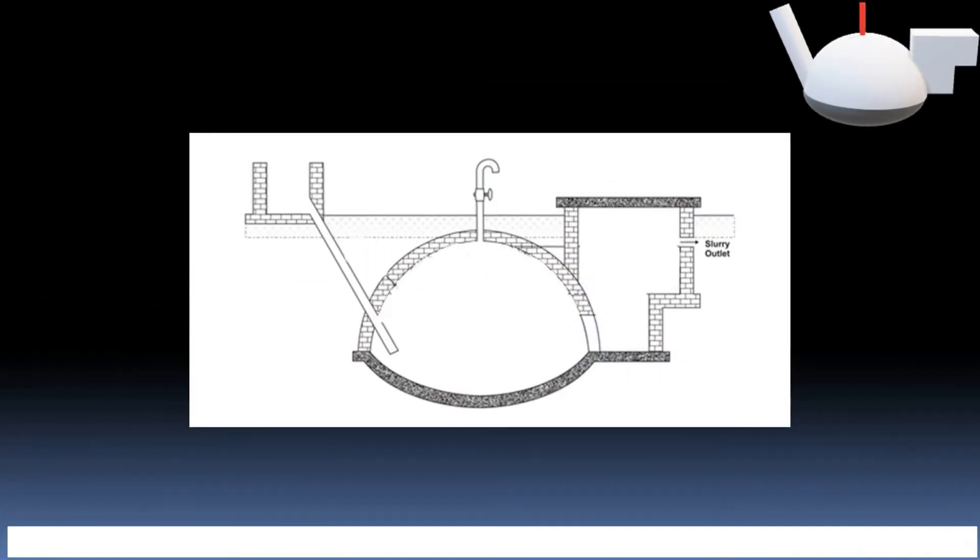Now let us see 2D diagram of Deenbandhu biogas plant which we will be using to study its working. Let us first compare 2D diagram with 3D model.